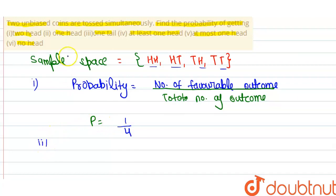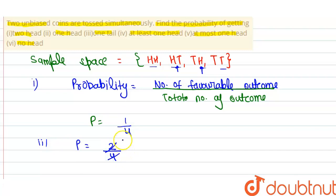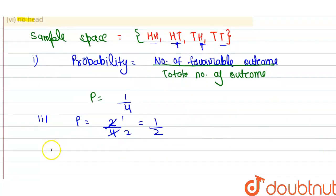For case two, the probability of one head — in head-tail we have one head, and in tail-head we also have one head. So the number of favorable outcomes is two and total outcomes is four, giving probability equal to one by two.